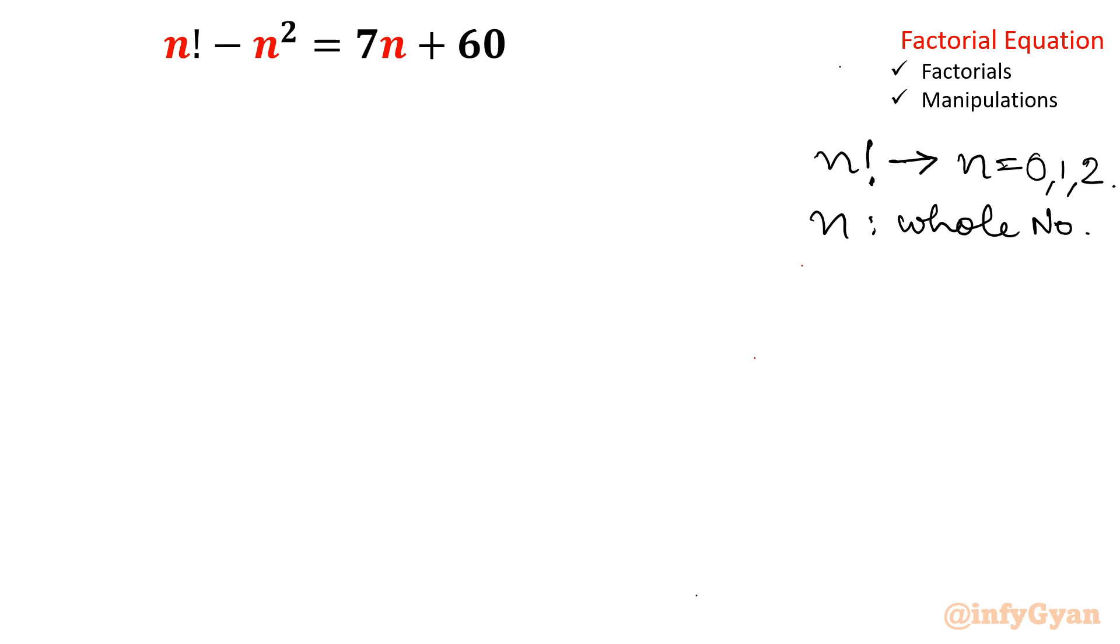Now if you will see I can make this quadratic equation if I will shift minus n square to the right. So if I will add n square to both sides, equation will convert into n factorial is equal to n square plus 7n plus 60.